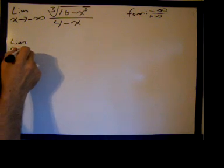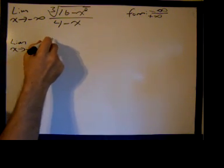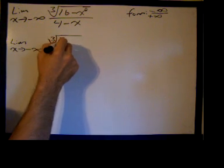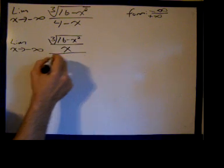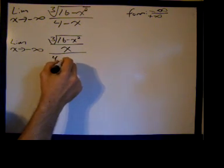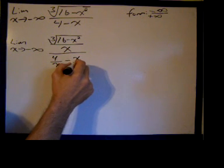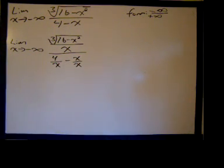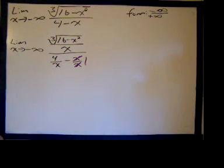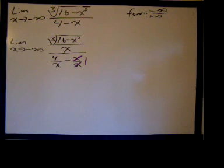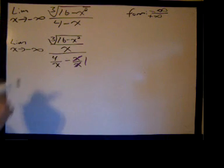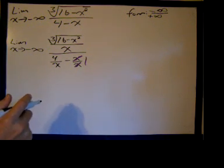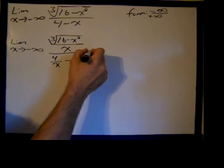So we'll take the limit as x approaches negative infinity of the cube root of 16 minus x squared, divided by x, divided by 4 divided by x minus x over x. We'll simplify — x over x is of course 1.